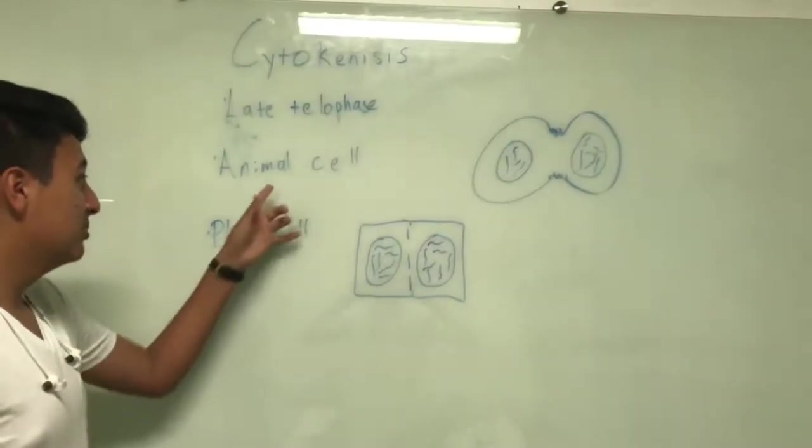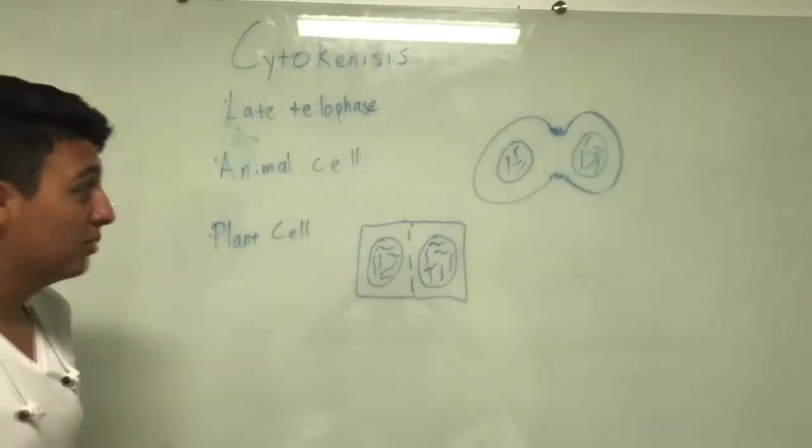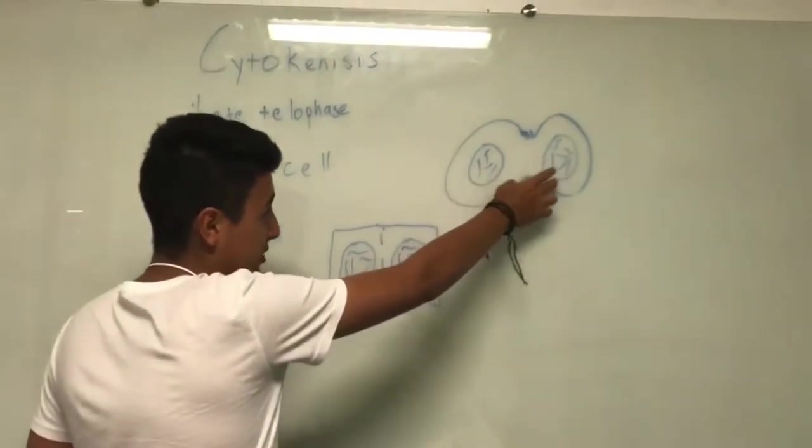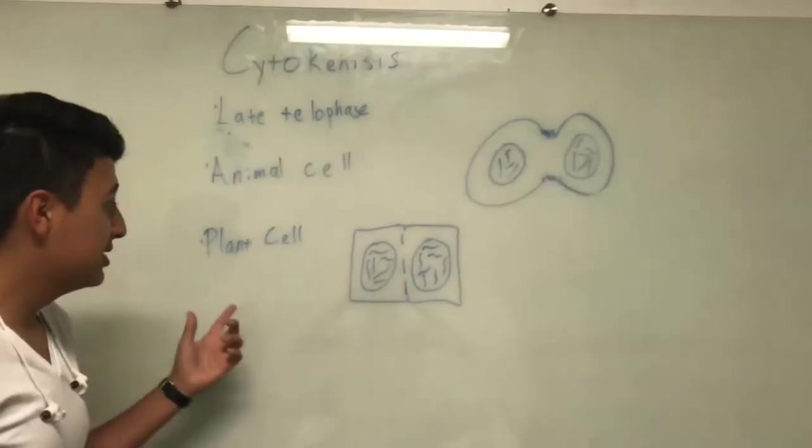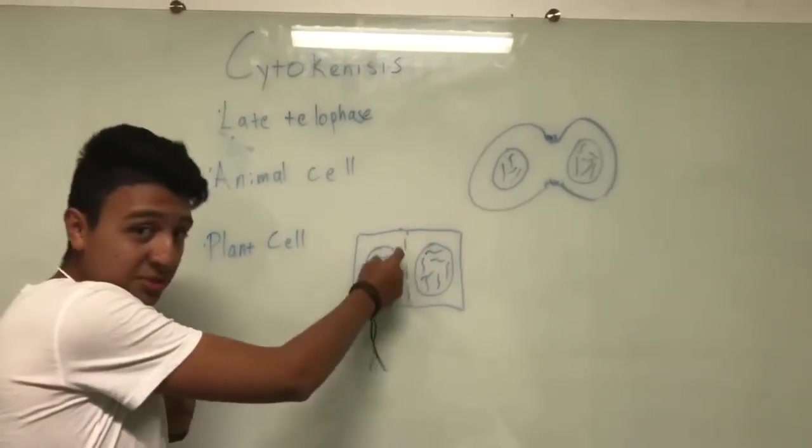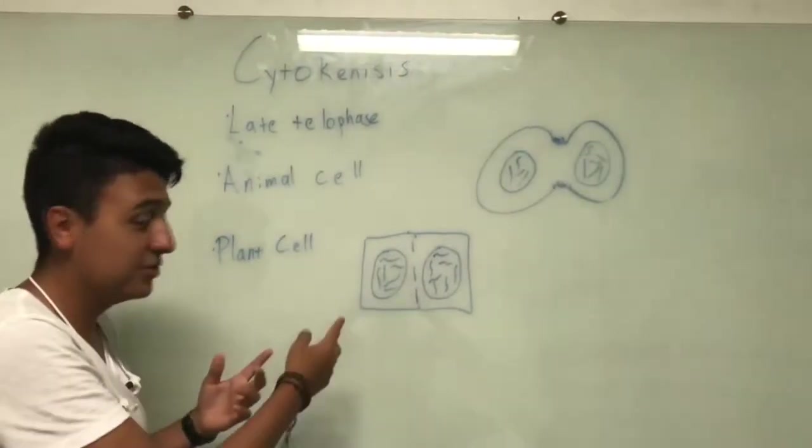The difference between the animal and the plant cell is that the animal cell will form a cleavage furrow in between the parent cell, which eventually will turn into the two daughter cells individually. As compared to the plant cell, we're going to be having a formation of what can be called a cell plate, which eventually becomes a cell wall for the plant and splits into the two daughter cells.